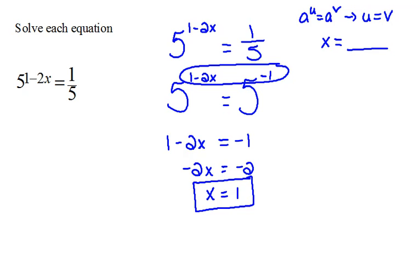Now, we could check this. We absolutely could. If I were to put in a 1 in place of x, that would be 5 to the 1 minus 2 times 1 power, which would be 5 to the 1 minus 2 power, which would be 5 to the negative 1. That is 1 fifth. So, both sides actually are the exact same. That's kind of our check on ourselves.